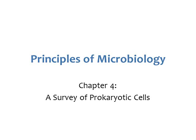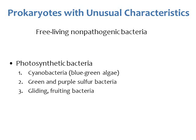This is part 3 of 3 on chapter 4, a survey of prokaryotic cells. In this part of the chapter, I'm going to look at unusual prokaryotic organisms — specifically prokaryotes with unusual characteristics, starting with three different types of unusual free-living, non-pathogenic bacteria.